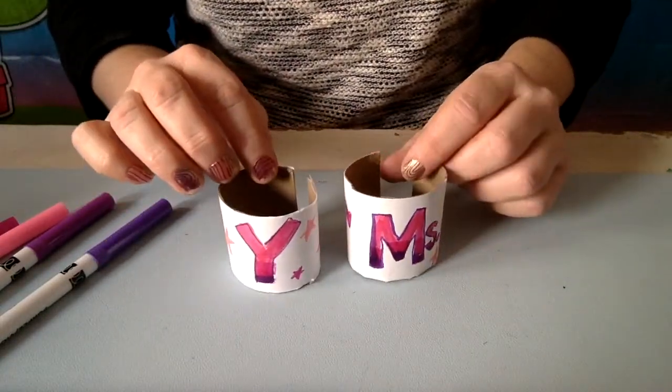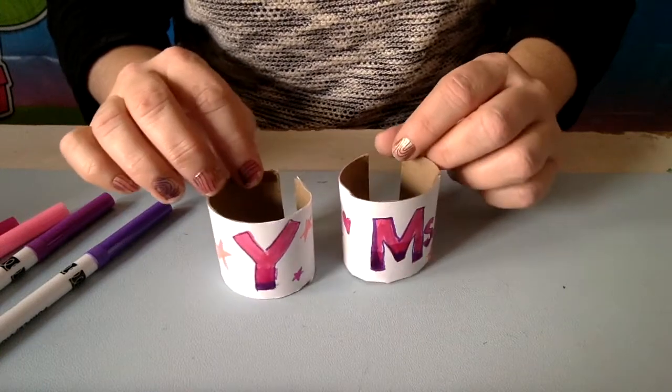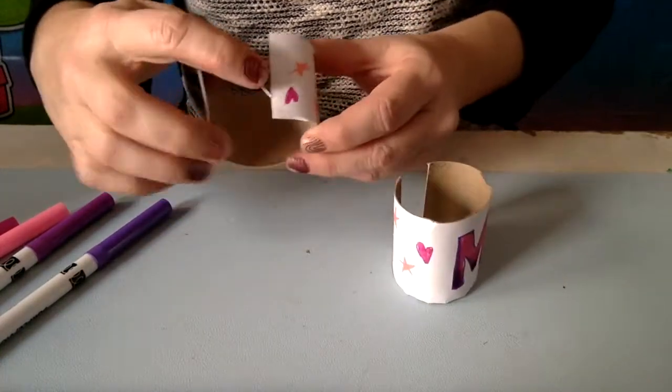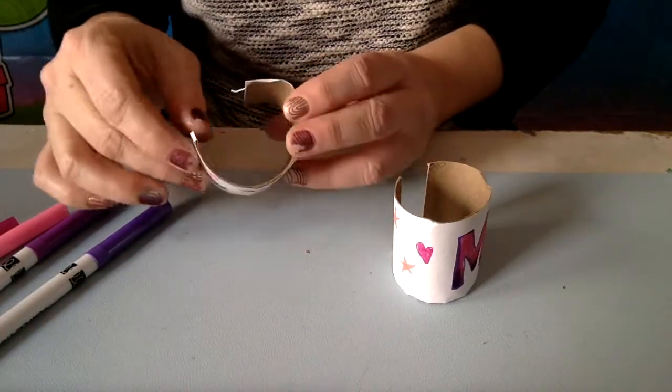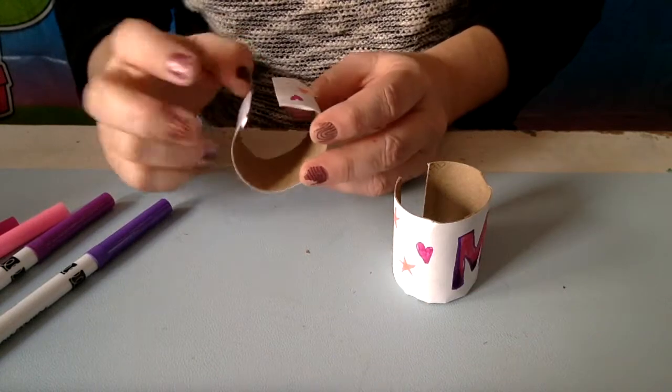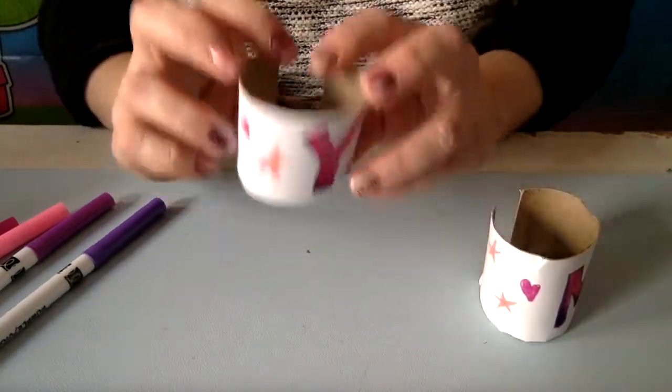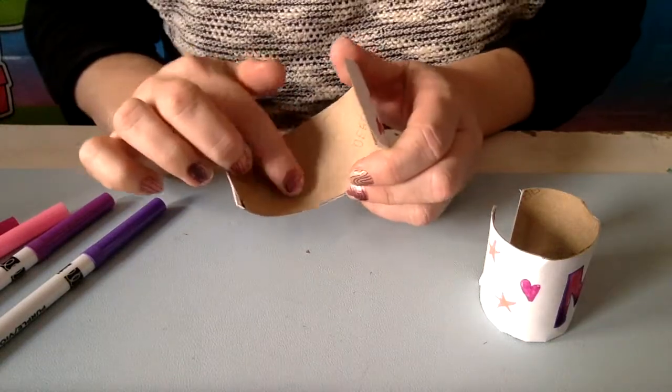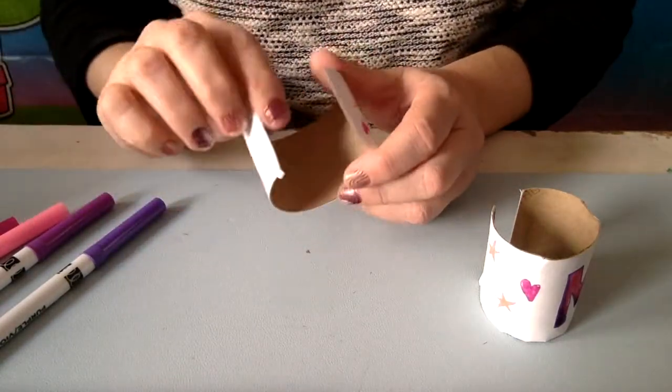There's mine, Miss Y. Now on the inside of my superhero cuffs, on this part that does not have the white paper, I'm going to write a word that reminds me of how I can be a superhero. Nobody else is going to see it, it's only going to be for me, my little secret. You get to decide what your word is and you are going to write it inside your superhero cuffs.